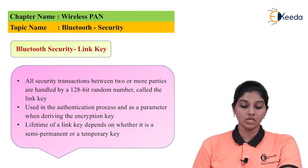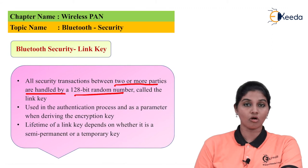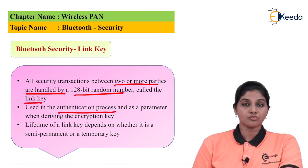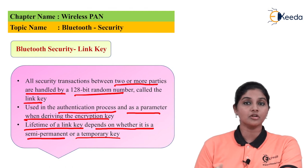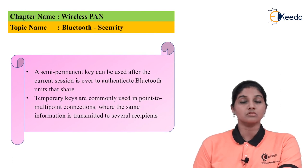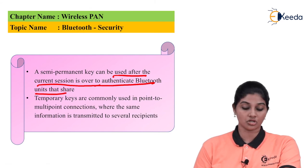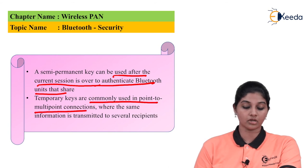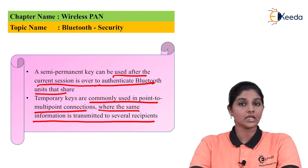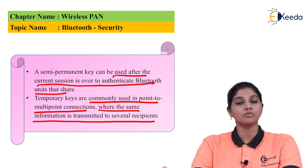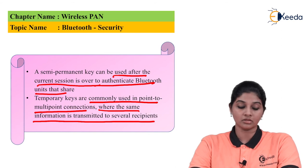All security transactions between two or more parties are handled by a 128-bit random number called a link key, used in the authentication process and as a parameter for encryption. The lifetime of the link key depends on whether it is semi-permanent or temporary. Semi-permanent keys can be used after the current session to authenticate Bluetooth units that share them. Temporary keys are commonly used in point-to-multipoint connections when the same information is transmitted to several receivers.